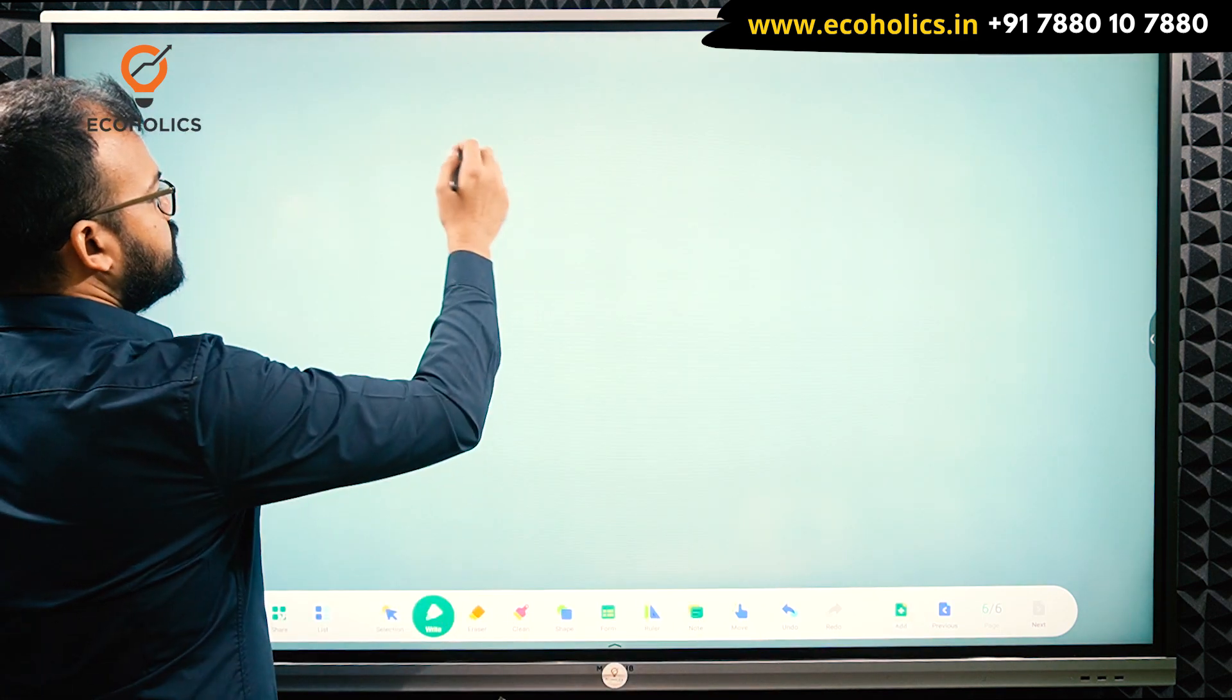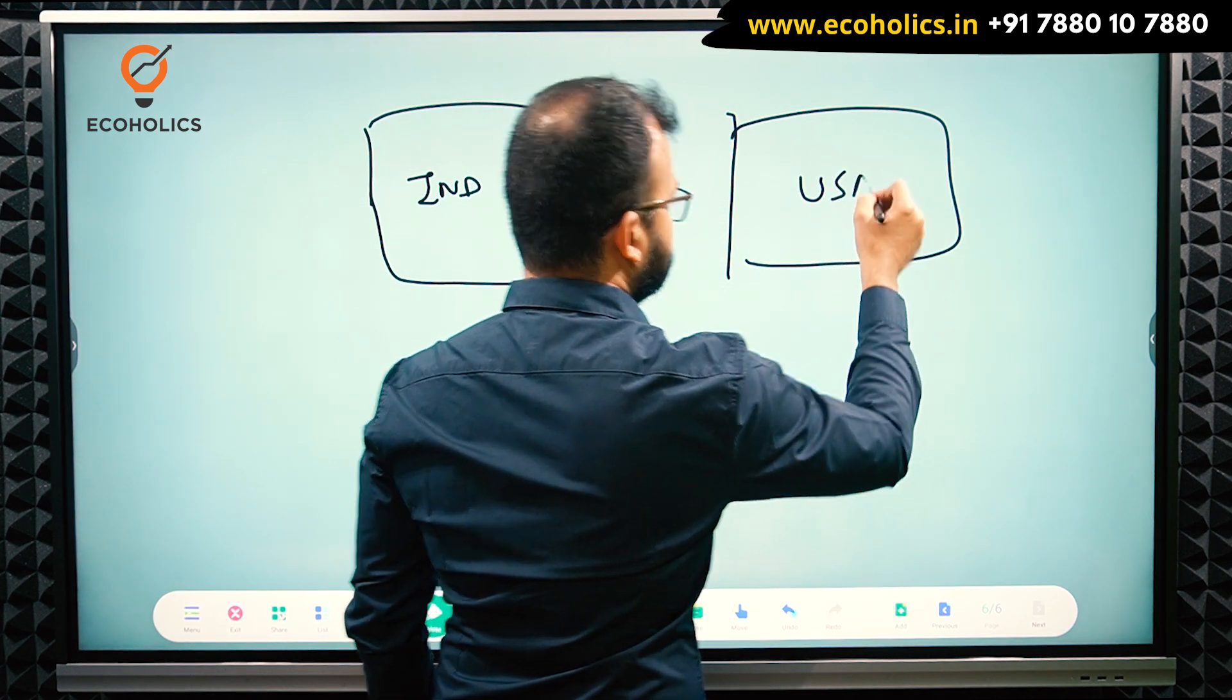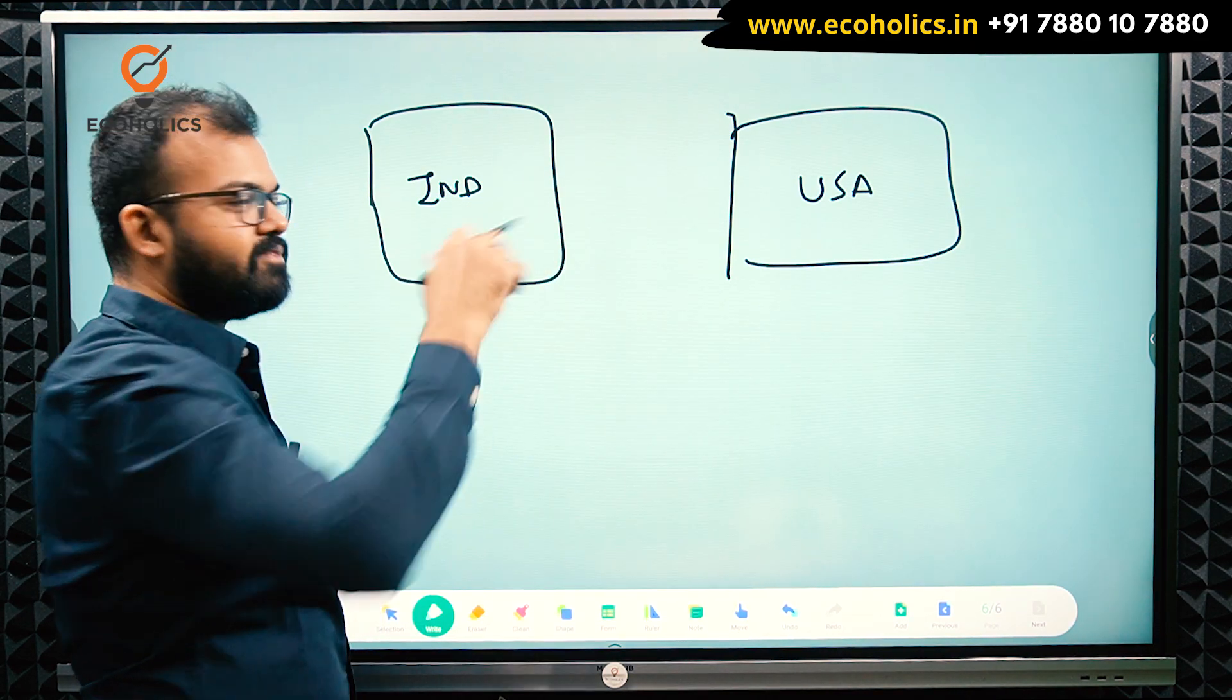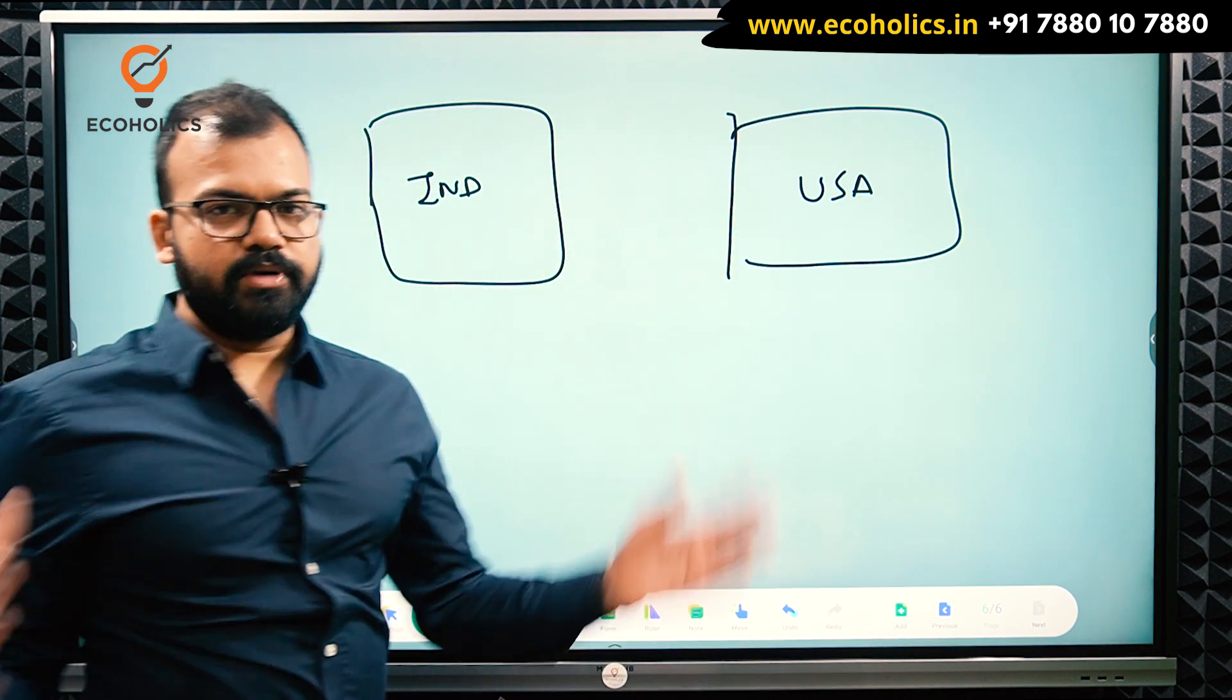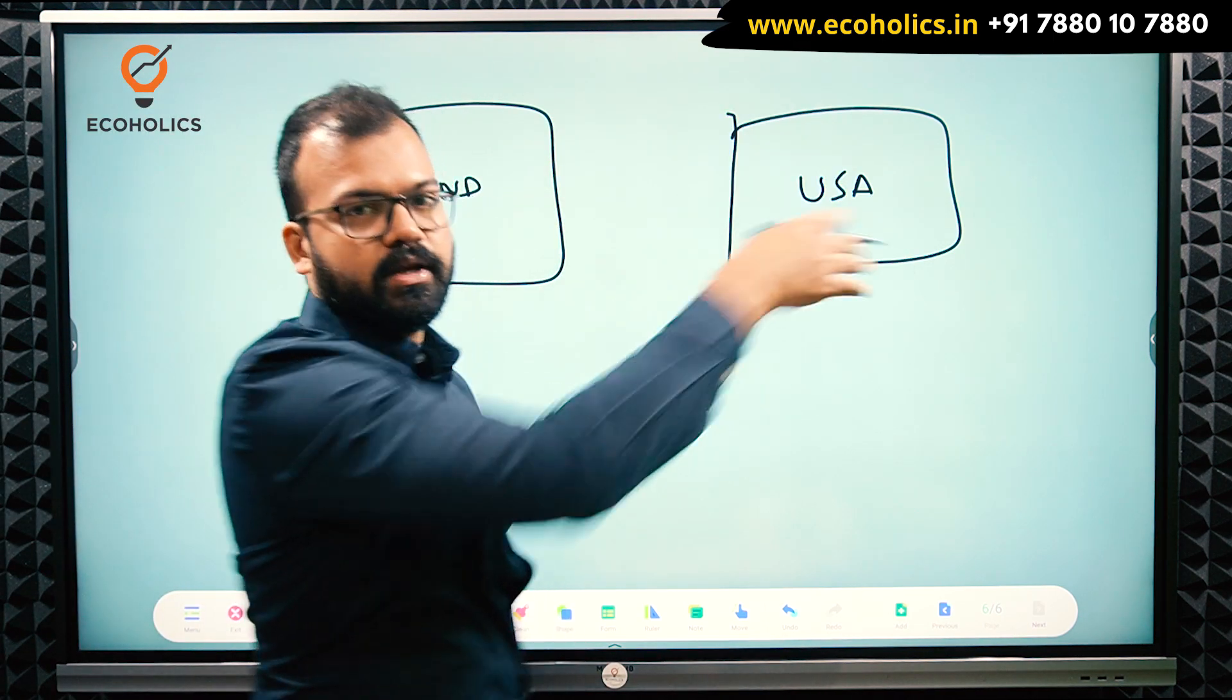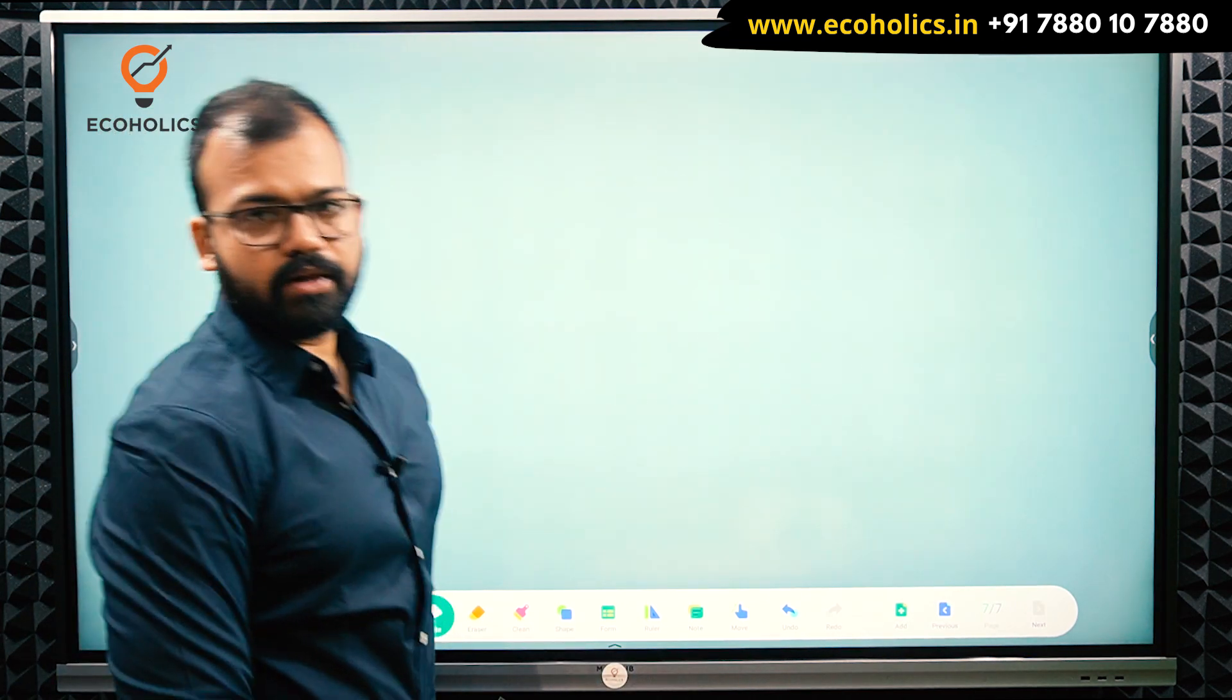Now there are assumptions. Suppose this is our country, India. This is United States of America. There are certain assumptions that labor is considered homogeneous within the country, but not with other countries. So labor of India will have the same productivity. But labor of India and labor of US would be different. On the same lines, labor is mobile in India. It means labor can move from one place to another: Delhi to Mumbai, to Chennai, to Kolkata. But labor cannot travel internationally. So labor is immobile internationally. These are a few assumptions you can read from the book. Other PDFs are also available on the Ecoholics app.